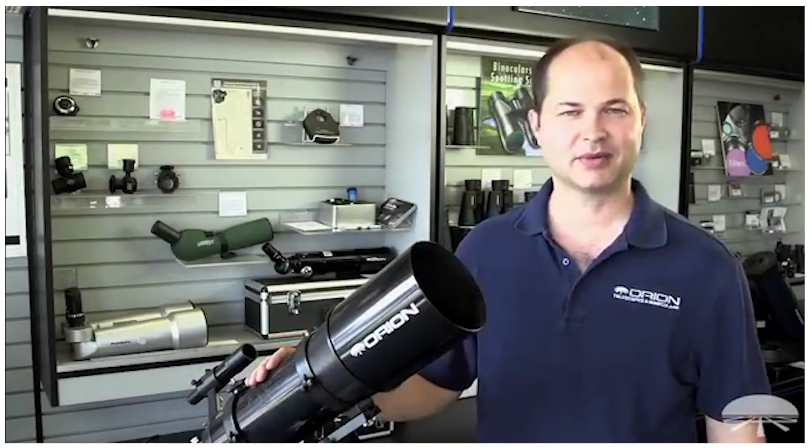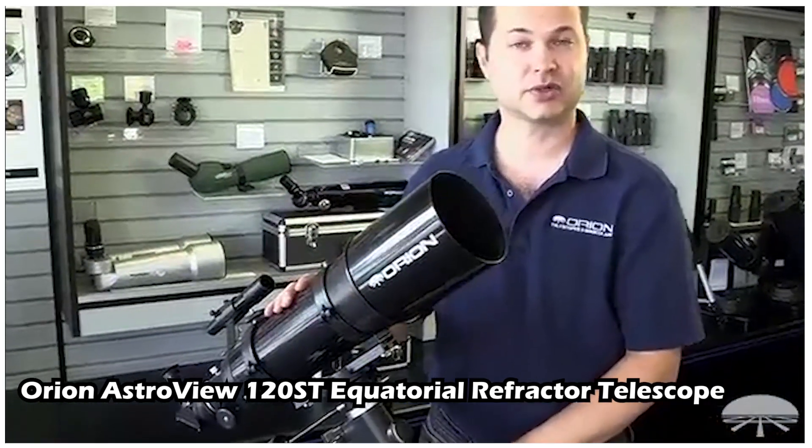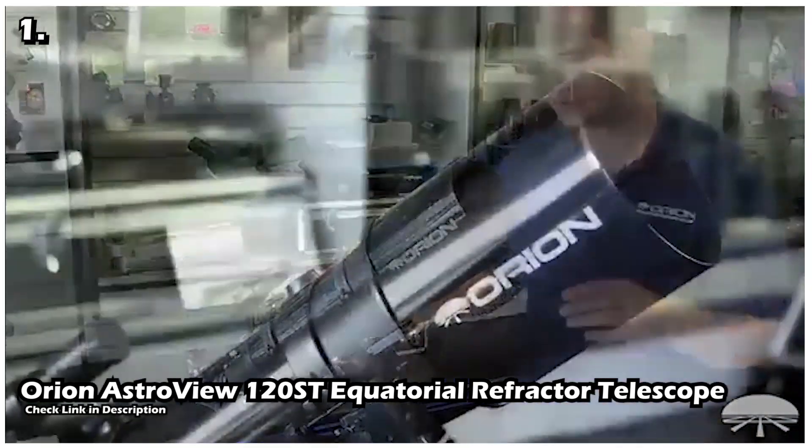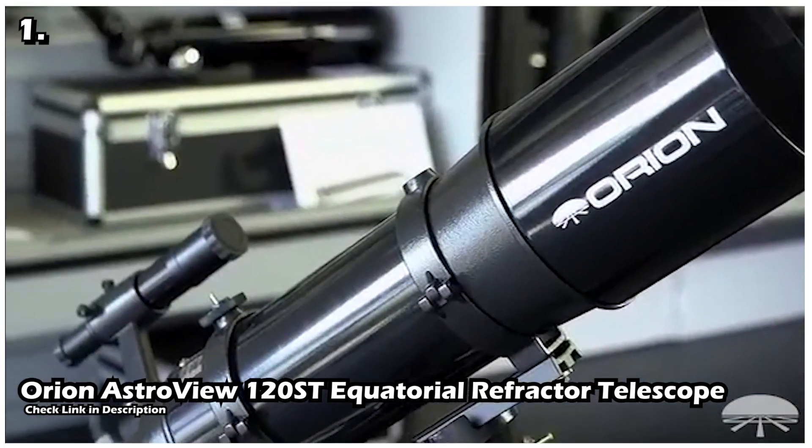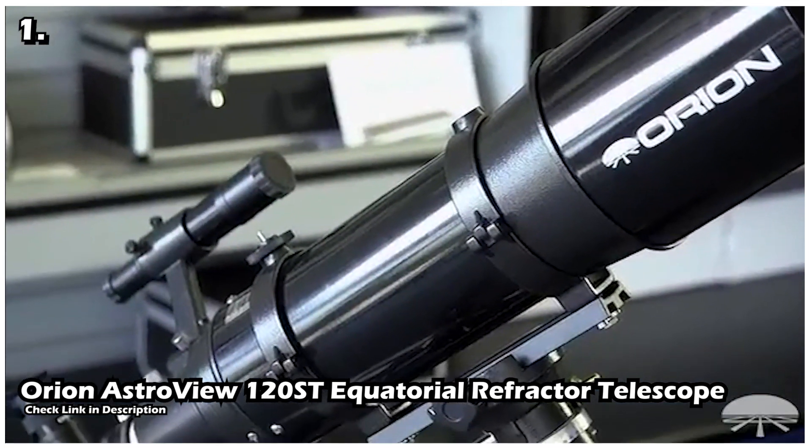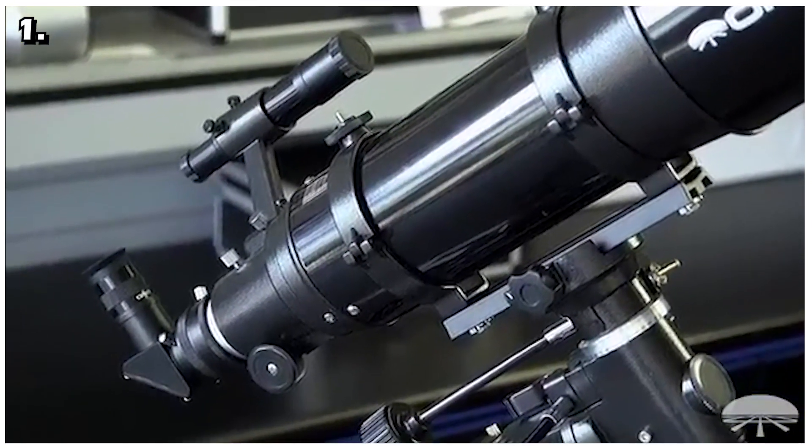Our first telescope is Orion Astroview 120ST Equatorial Refractor Telescope. Refractor telescopes have long been known as great optical instruments for studying the planets and moon. But with its short focal length and generous 120mm aperture, this telescope takes refractor usage to new depths.